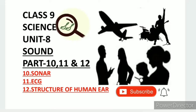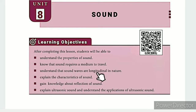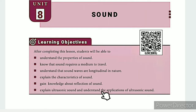Greetings from SS Class 9 Science Unit 8 Sound, Part 10: SONAR, Part 11: ECG, Part 12: Structure of Human Ear. The learning objectives are: understand the properties of sound, know that sound requires a medium to travel, understand that sound waves are longitudinal in nature, explain the characteristics of sound, gain knowledge about reflection of sound, explain ultrasonic sound, and understand the application of ultrasonic sound.